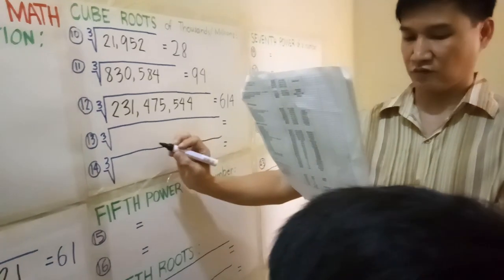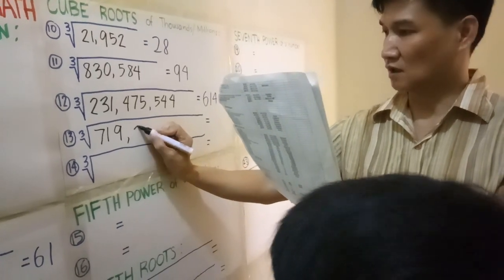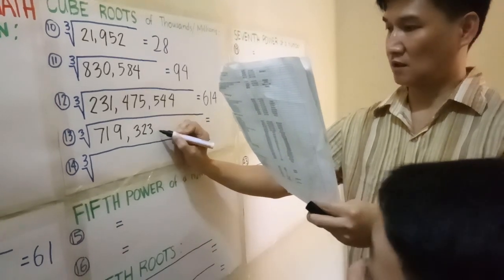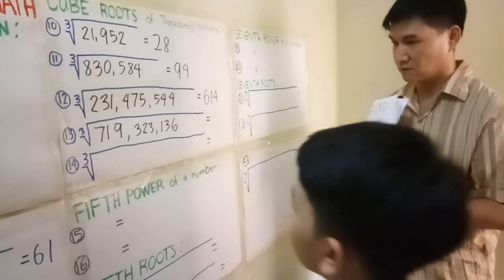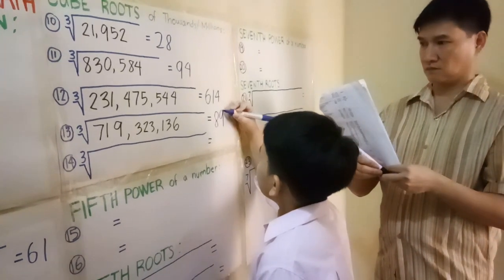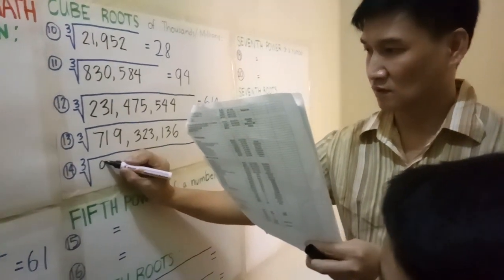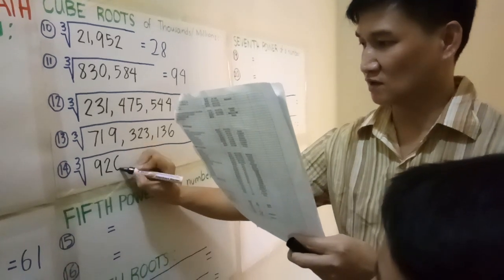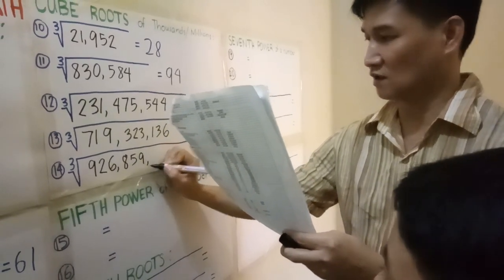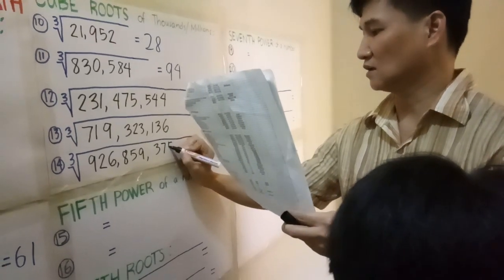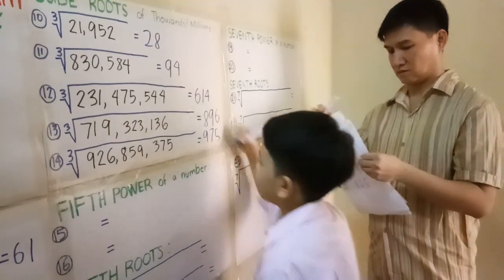What is the cube root of 719,823,136? 886. Bravo, Joshua. What is the cube root of 926,859,375? 975. Bravo!